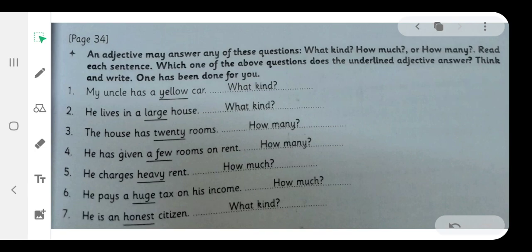Number three. The house has 20 rooms. 20. Answer: How many? Number four. He has given a few rooms on rent. A few. Answer: How many?